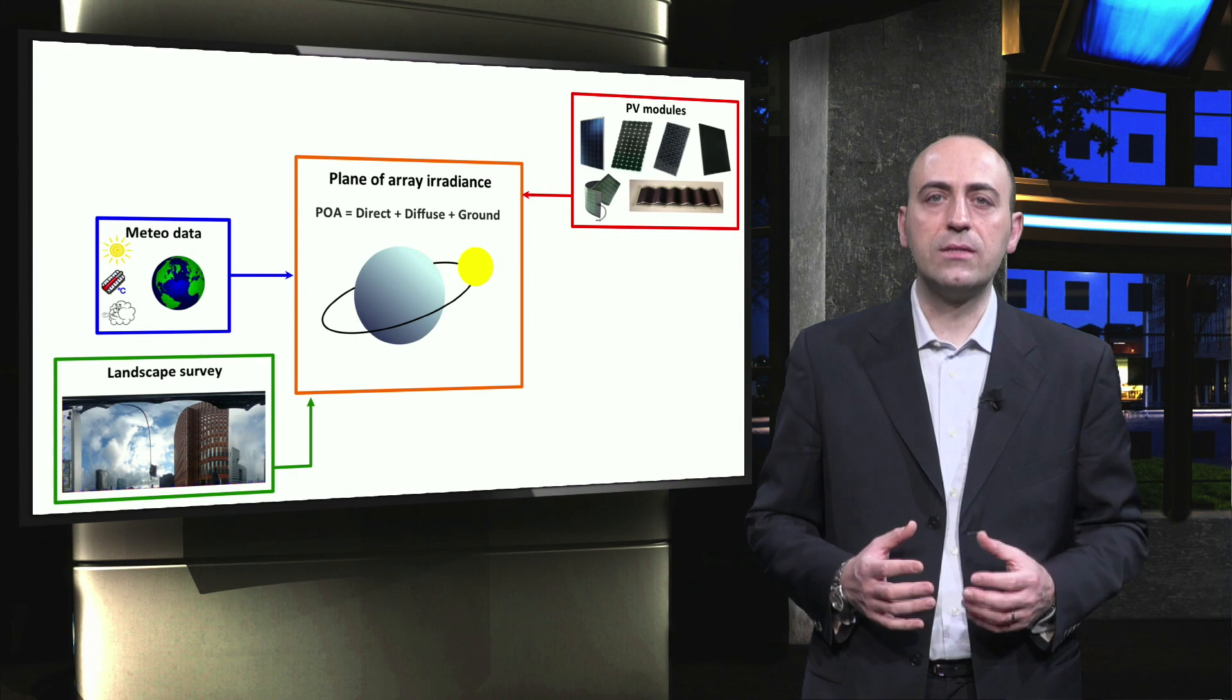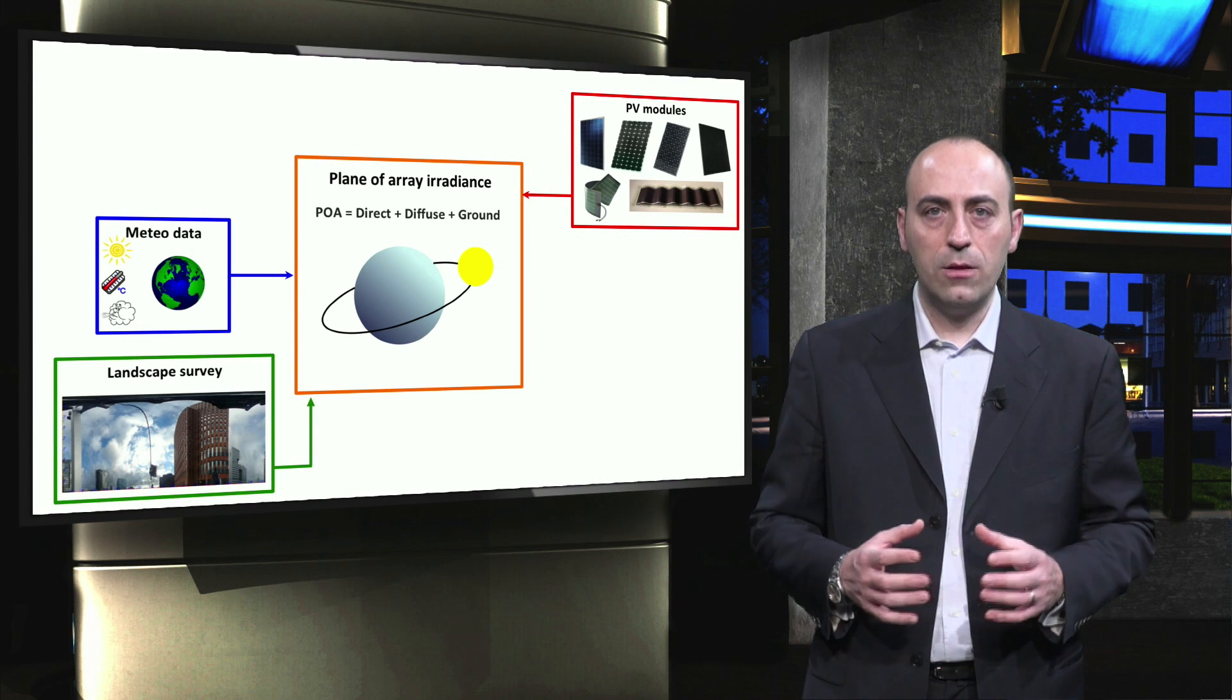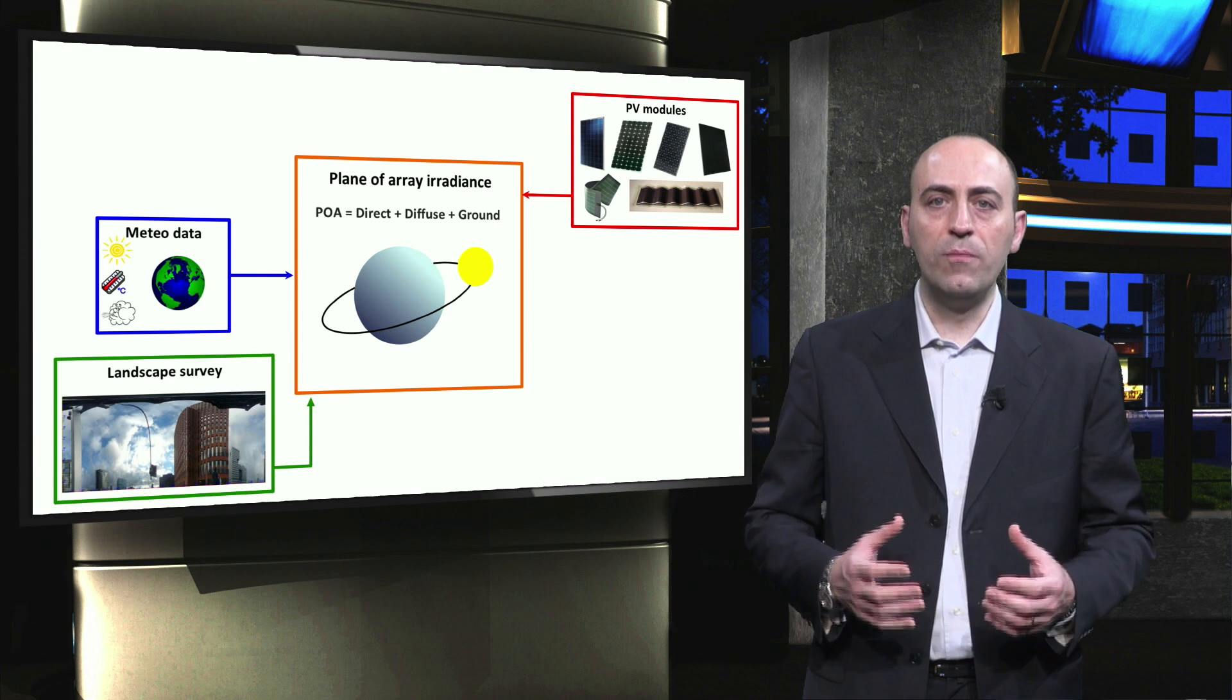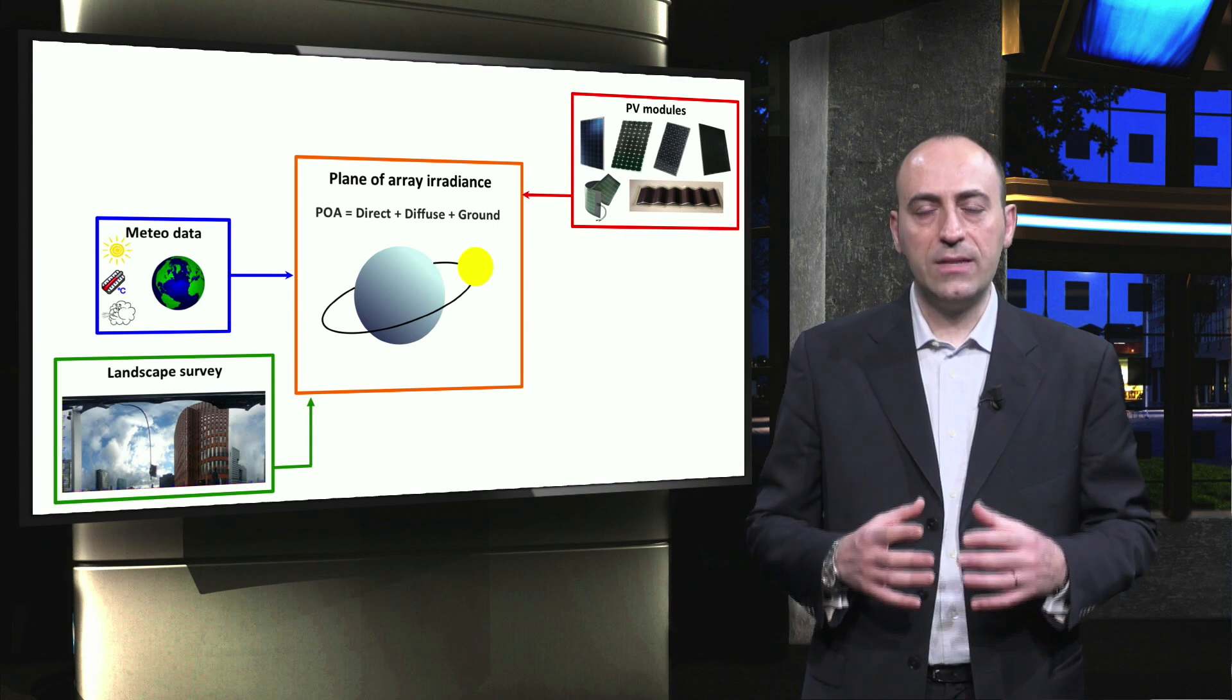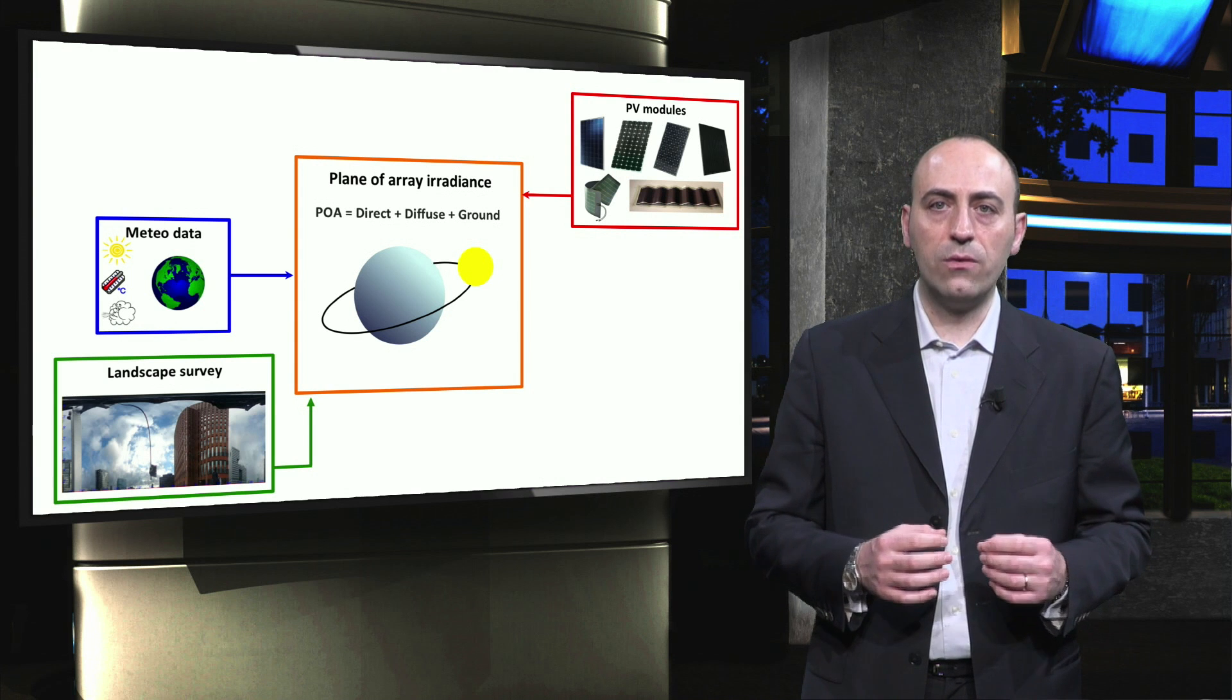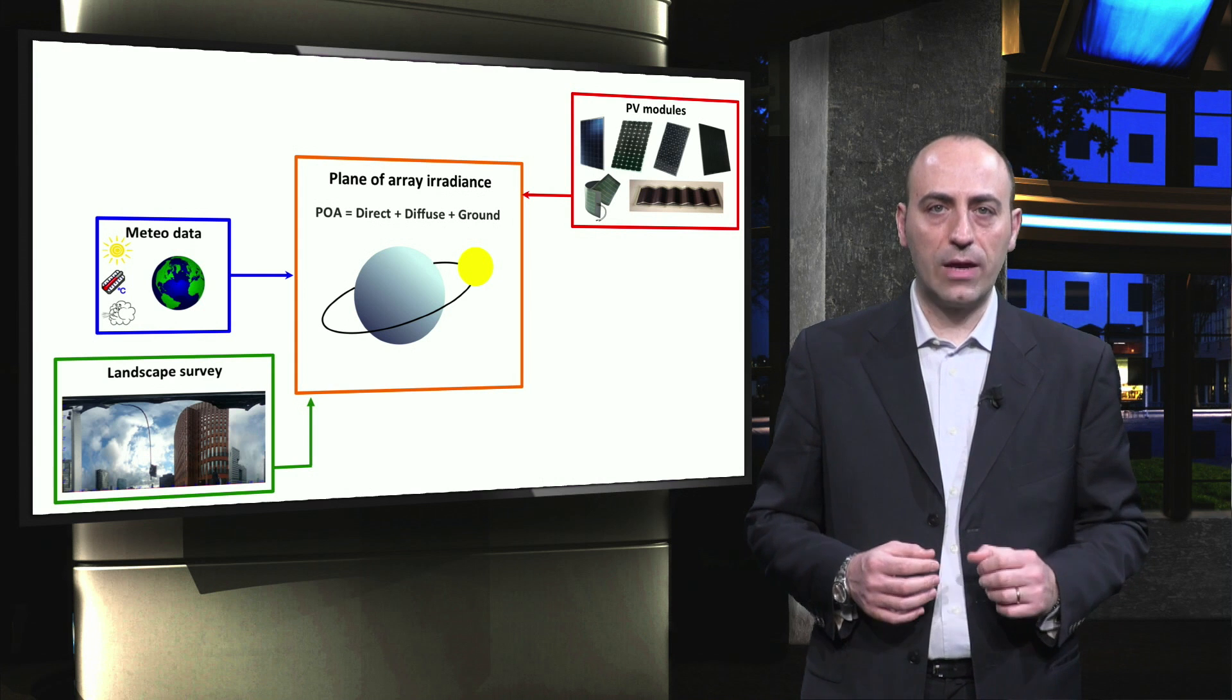The plane of array irradiance is a combination of direct, diffuse, and ground irradiance. The plane of array irradiance varies throughout the day due to the movement of the sun in the sky. By estimating the plane of array irradiance for a given module tilt, angle, and orientation, we can find the optimal tilt and orientation for a PV system in any location.